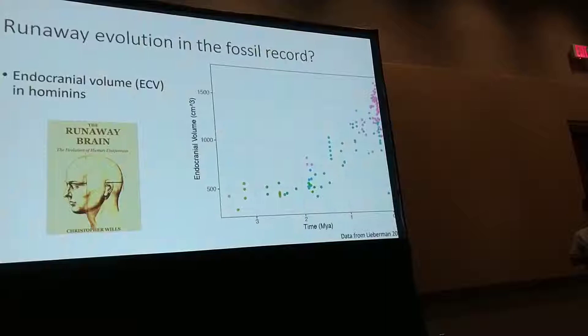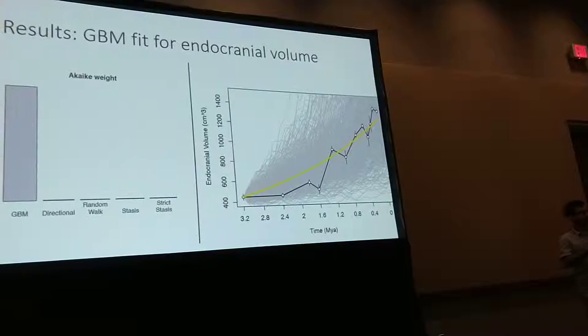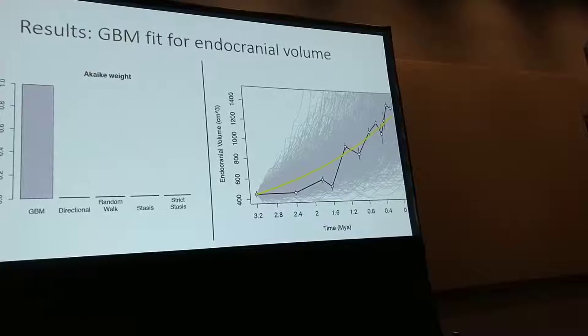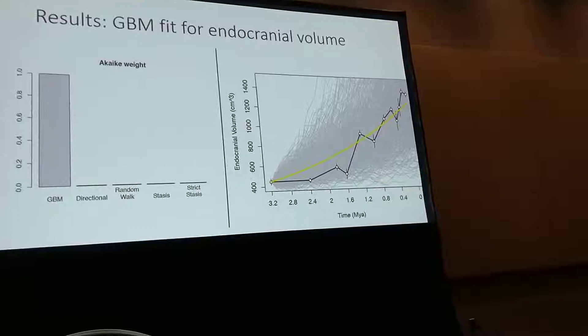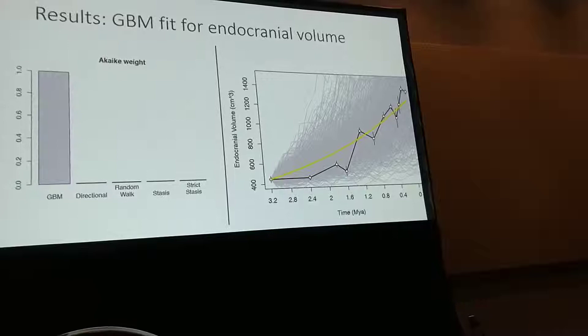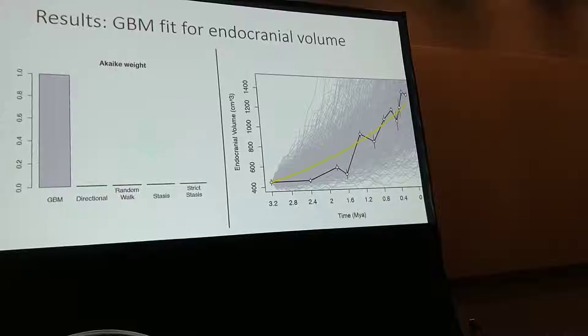How does that apply to hominin brain evolution fossil time series? It turns out the GBM — geometric Brownian motion — explains the increase in brain volume in hominins much better than the other models, as represented by the model weight shown in the bar plot on the left. On the right, we have the best predicted model in yellow, with the time series in black and 500 simulations of the best estimated parameters shown in gray.